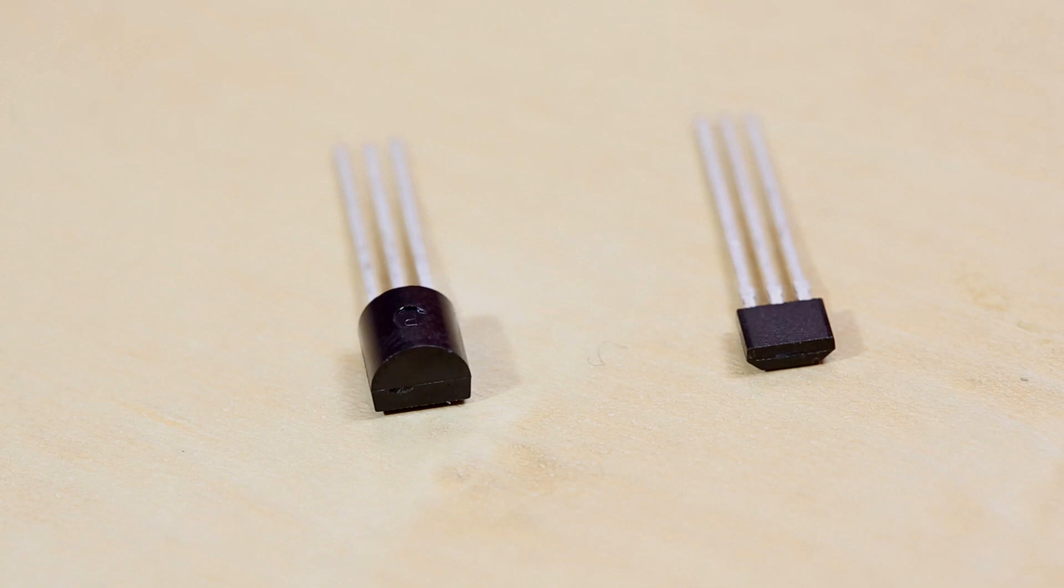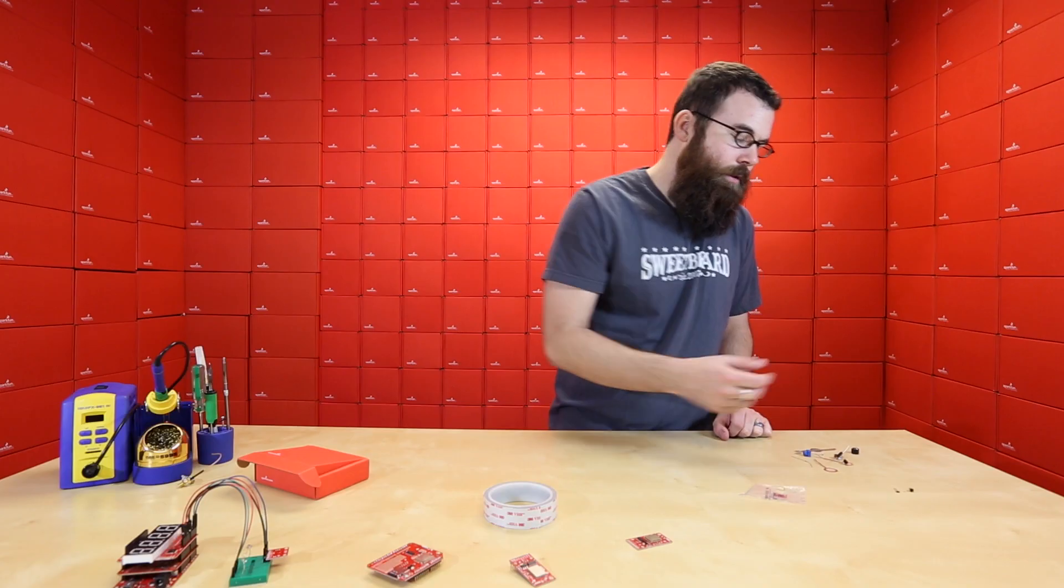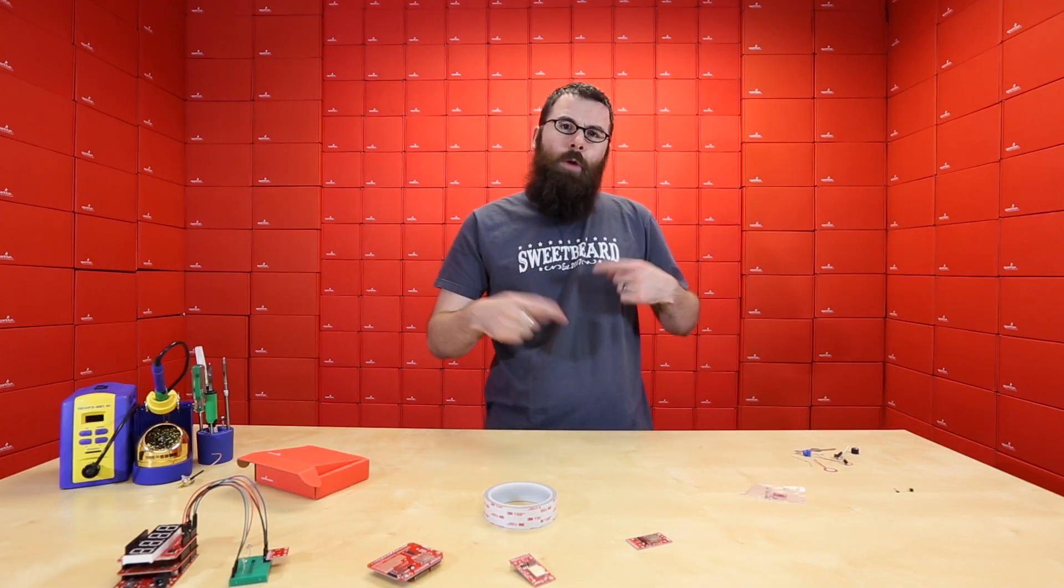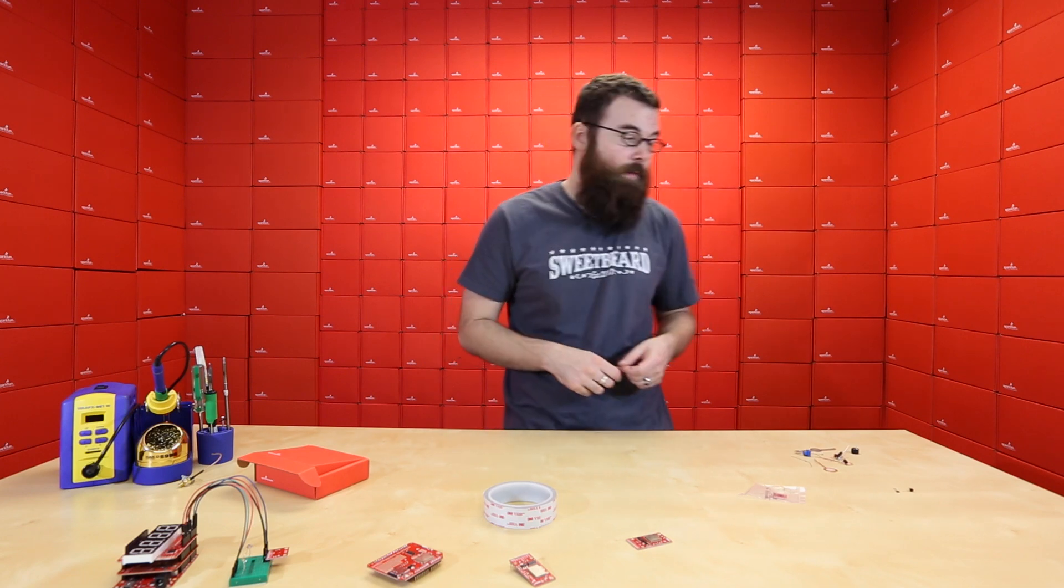Next, there's a temperature sensor as well as a hall effect sensor. A hall effect sensor basically turns on in the presence of a magnet. So it's useful for all sorts of different applications. It's usually used in RPM or something like that, where a magnet would pass over top of it and it could count the number of revolutions.